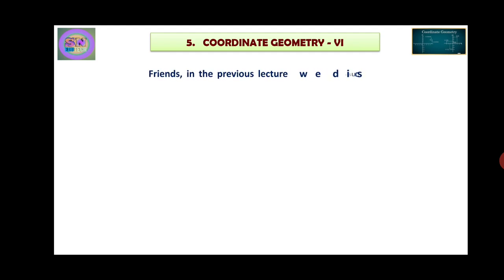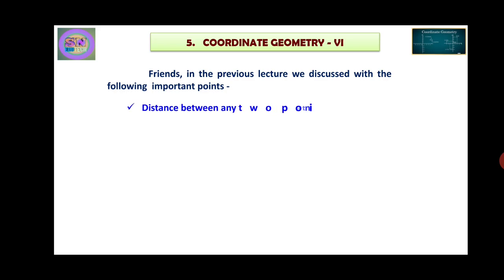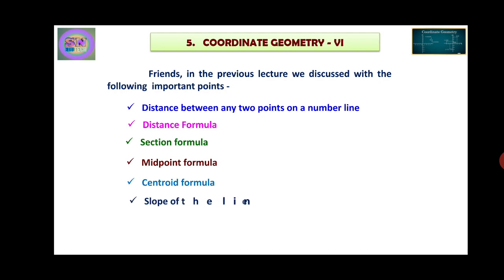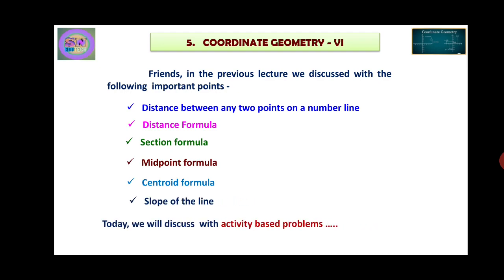Friends, till now in the different 5 parts of this Coordinate Geometry, we have discussed the following important points: Distance between any two points on a number line, Distance Formula, Section Formula, Midpoint Formula, Centroid Formula, and Slope of a Line. Today we will discuss activity-based problems and question number 4 and 5.